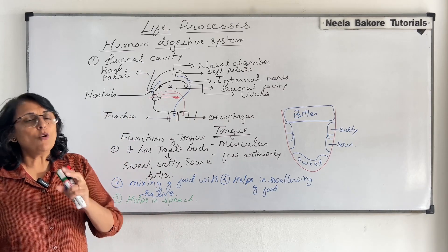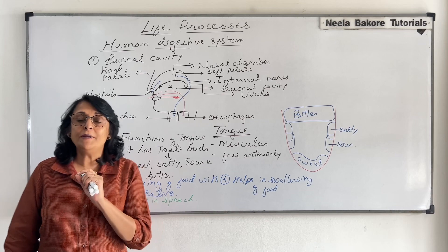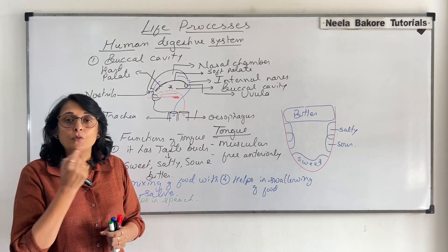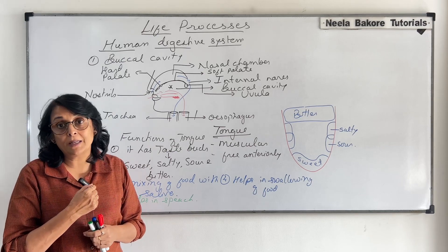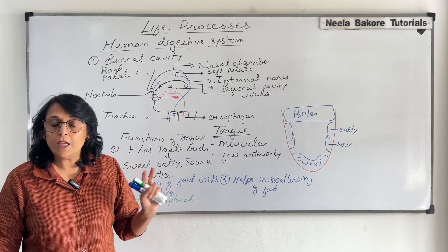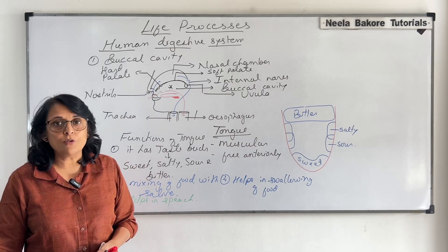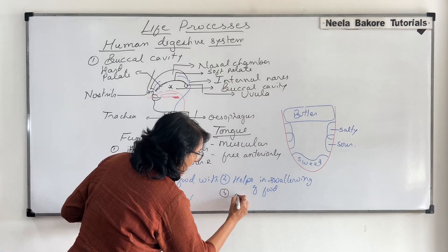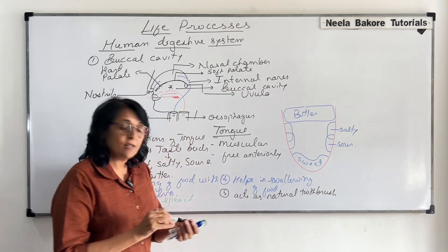There is one more function we don't realize until we get a tiny ulcer on the tip of our tongue. The tip keeps hitting some part of our jaw or teeth and it hurts — that's when we realize how much the tongue is touching parts of our buccal cavity. Our tongue is continuously moving even when we are not talking, even when we are just listening or thinking. What is it doing? It is cleaning our teeth. So the tongue acts as a natural toothbrush, helping in the cleaning of our teeth.